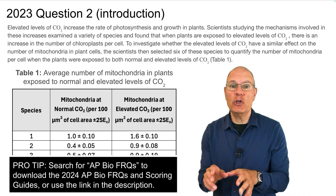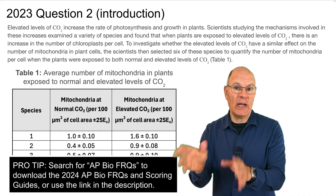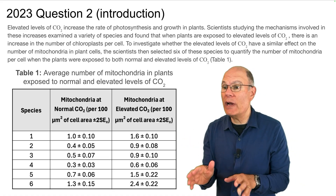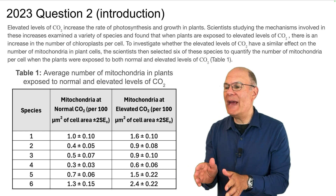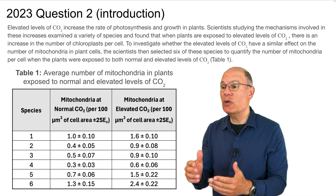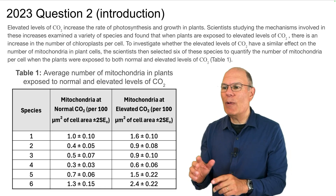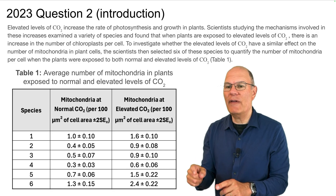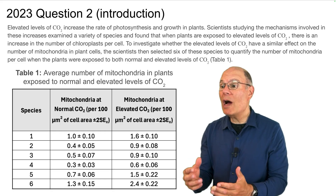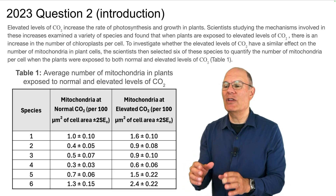2023 question two introduction. You should also read it on your own copy of the FRQ, which you can download from the College Board's website — the link is in the description. Elevated levels of CO2 increase the rate of photosynthesis and growth in plants. Scientists found that when plants were exposed to elevated levels of CO2, there is an increase in the number of chloroplasts per cell. To investigate whether elevated CO2 has a similar effect on mitochondria, scientists selected six species to quantify the number of mitochondria per cell at both normal and elevated CO2 levels.